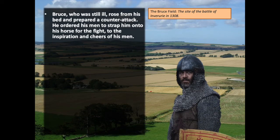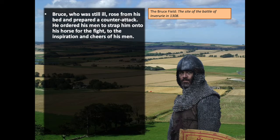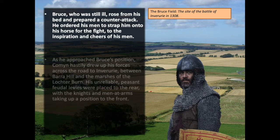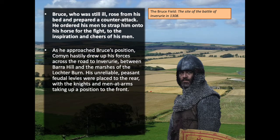Bruce, who was still ill, rose from his bed and prepared a counterattack. He ordered his men to strap him onto a horse for the fight, to the inspiration and cheers of his men. They had to lash him to that horse — Bruce did not have the physical strength to sit upright long enough to ride and control the battle. He had to be held in place. But he knew the symbolic value of it: the king had risen from his sickbed, the king was going to be alright. It roused his men, and you can imagine their cheers rolling across the battlefield.